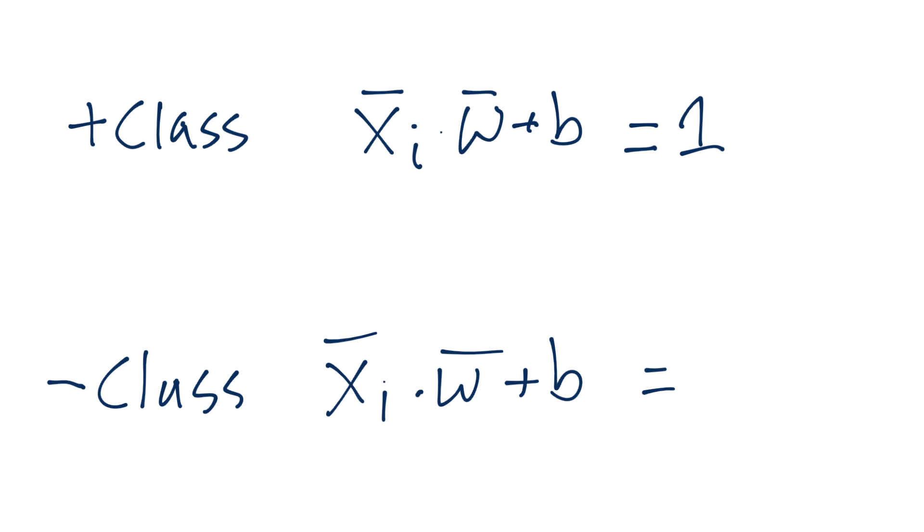Then what we're going to do is take this y sub i and multiply it by the equations that we were using to identify the positive and negative support vectors. For the plus class, it was x sub i dotted with w plus b equals one. For the minus class, it was x sub i dotted with w plus b equals negative one. Now we're stating that y sub i equals one for the plus class and y sub i equals negative one for the minus class.